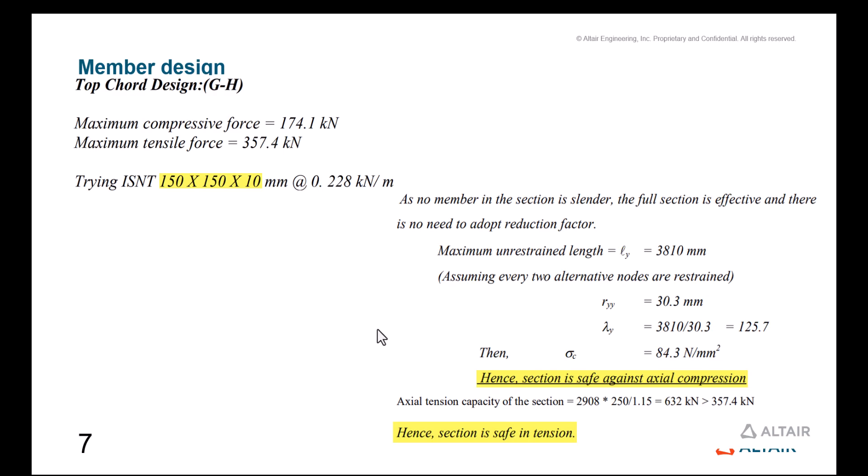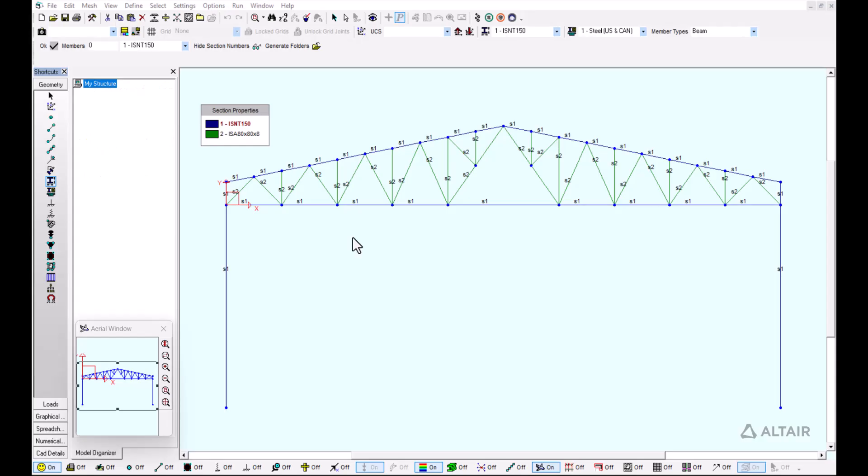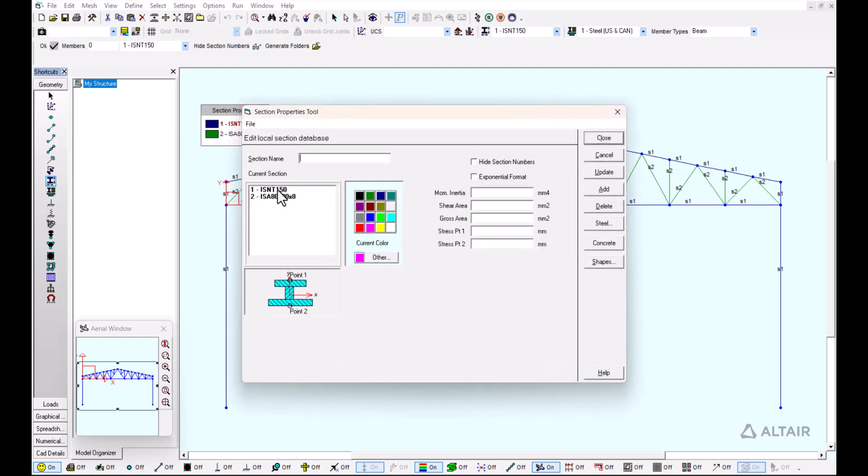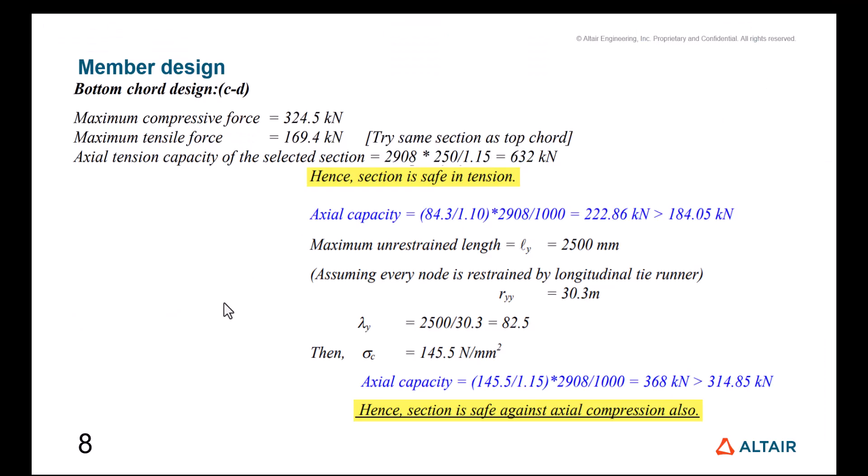We know that this is safe against actual compression, and because the actual tension capacity of the section is 632 kilonewtons, more than the demand of 357 kilonewtons, we know that the section is also safe in tension. With that in mind, we have taken these top chords and assigned them that particular section type, the ISNT 150 x 150 from the Indian steel database.